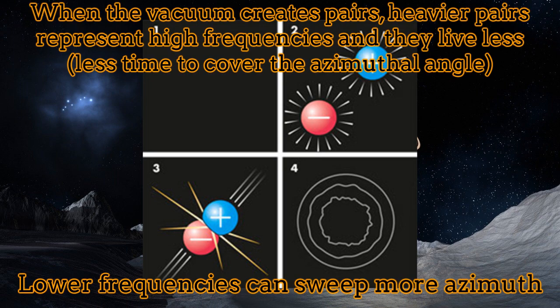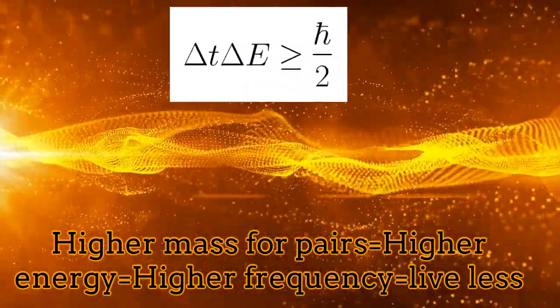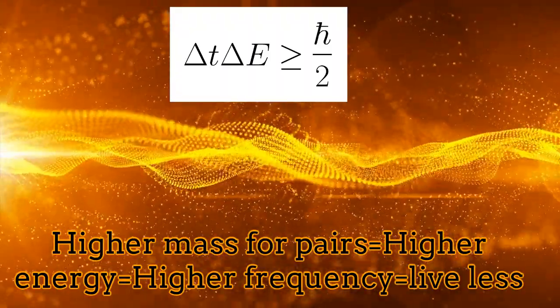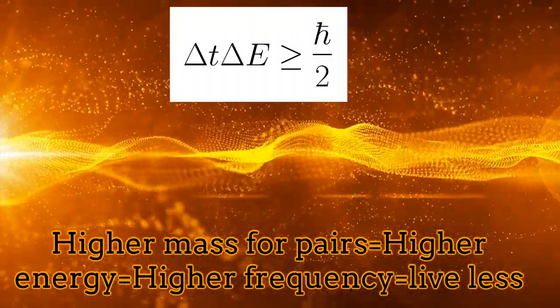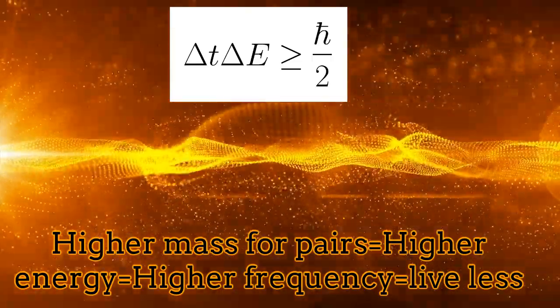Imagine for a moment a high-frequency mode generated by very heavy pairs of particle-antiparticle over the vacuum. In such a case, the time of living for this mode is very short. As a consequence, it will not be able to cover the whole azimuthal angle. Opposite conclusions apply for the long-wavelength modes. Then, the energy-time uncertainty principle is responsible for the short-wavelength modes or high-frequency modes not being able to cover the whole azimuthal angle.